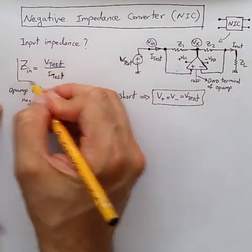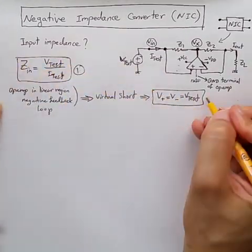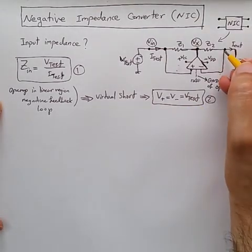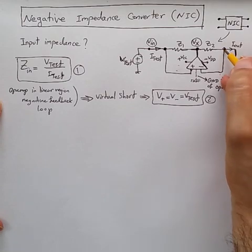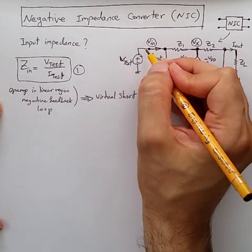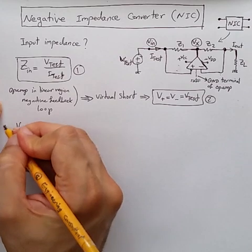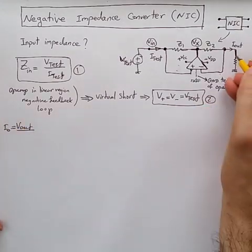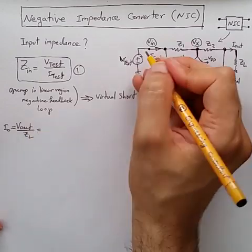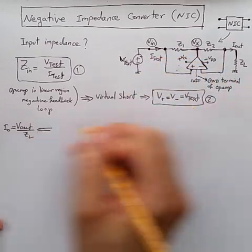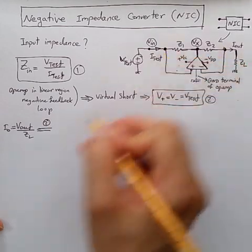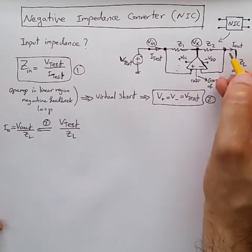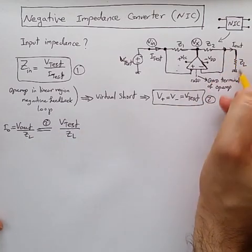So let's name this 1, 2, and now we can easily find out the value of the I-out, because V-out is equal to V-N, so I-out is equal to V-out divided by Z-out. V-out is equal to V-test.